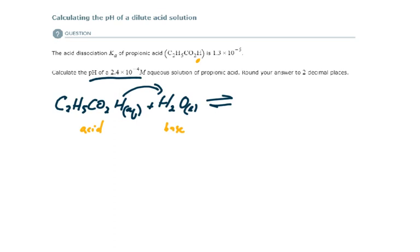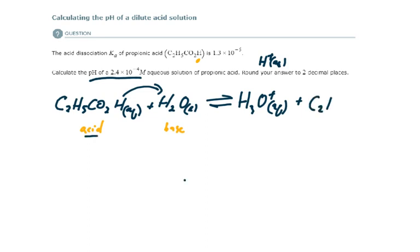One of our products is going to be hydronium — this could also be written as H⁺. The conjugate base of this acid would be C₂H₅CO₂⁻. Once we have the reaction equation written, we ensure that it's balanced, and we have our first step completed.